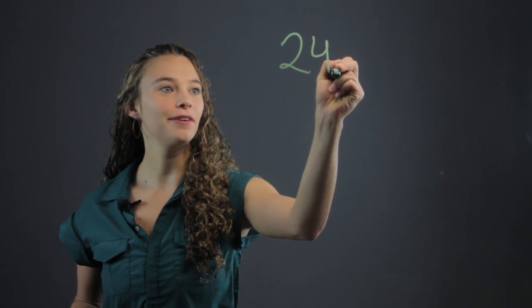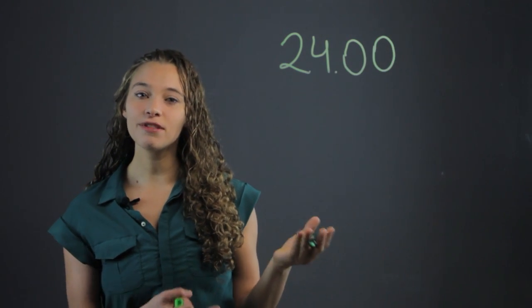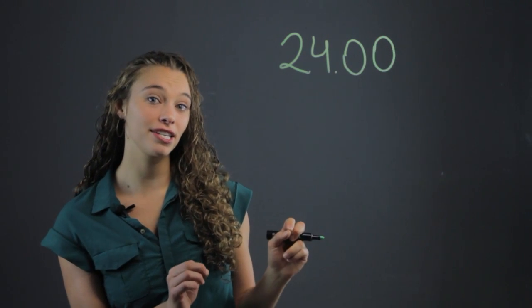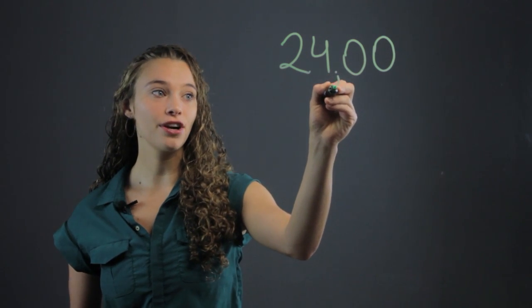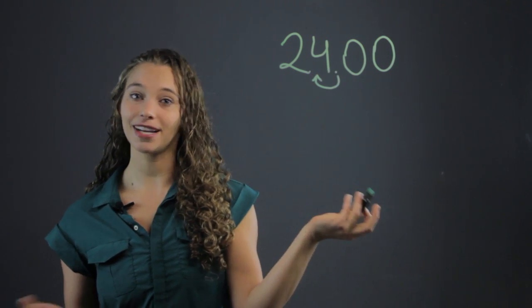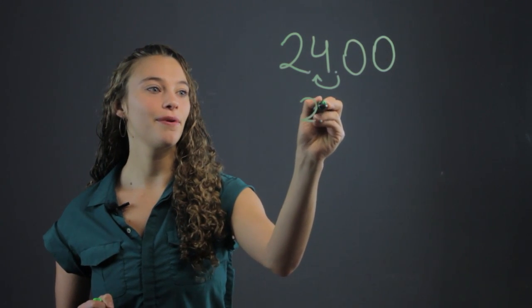So I show them, have them write out how much they spent, and then have them learn how to take 10%. Now, we move the decimal point over one place. That's how we take 10%. It's very easy. So we get 2.4.